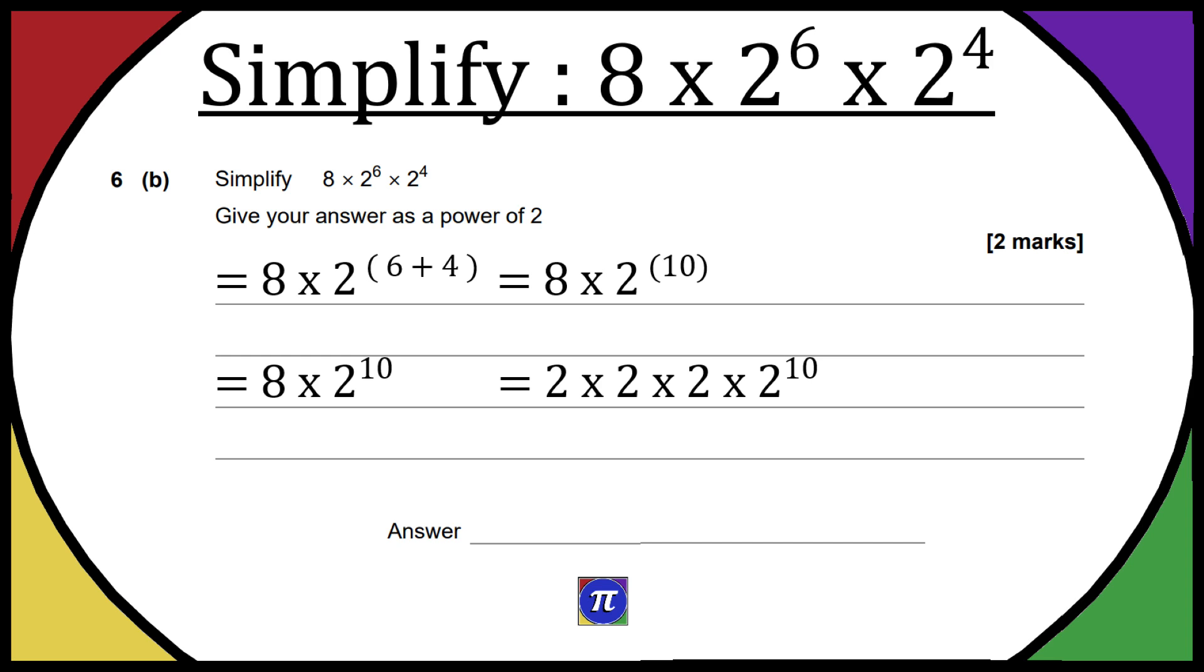So when we add these powers together, we can see it's going to be 2 to the power of 13, and that's it. That's the answer. That's how you simplify it and then write it as a power of 2.